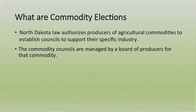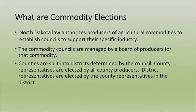Each county has the opportunity to have a county representative. County representatives are elected by all county producers of that commodity. Counties are grouped into districts, and every commodity council determines what their districts are. District representatives are elected by the county representatives in the district. The district representatives are the people who decide how the proceeds collected from the producers are spent — a very important job.